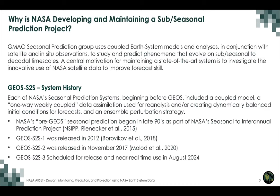The pre-GEOS system started quite some time ago — a model that didn't extend from pole to pole and fundamentally just covered the tropics, but was still used for seasonal prediction. GEOS S2S1 came out around 2012, version 2 in 2017 at higher spatial resolution, and our newest version is scheduled for release next month.